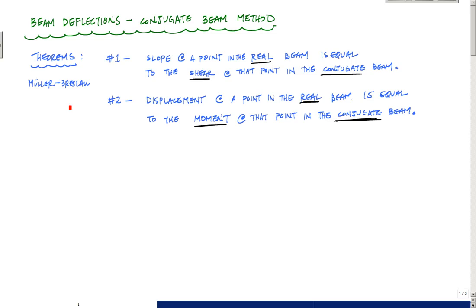This was by Mueller-Breslau, the same people who did the influence line stuff. What they were trying to do, they did by observation. The value of the conjugate beam method is that you can calculate deflections using statics — essentially using static principles on the conjugate beam.